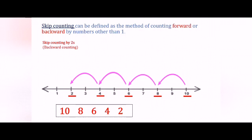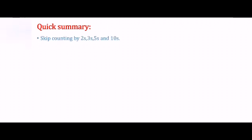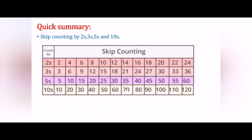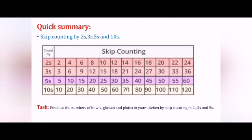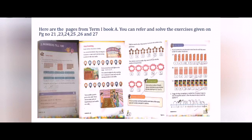I hope you understood skip counting by 2s, 3s, 5s and 10s. Now let's take a quick look at a summary. What have you learnt today? Skip counting by 2s, 3s, 5s and 10s. Here is a chart of skip counting by different numbers. I have one task for you: find out the number of bowls, glasses and plates in your kitchen by skip counting in 2s, 3s and 5s, and note it down on a sheet of paper. You can reference all the exercises given on pages 21, 23, 24, 25, 26 and 27. Thank you.